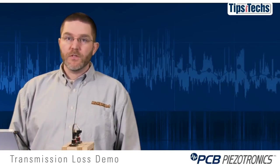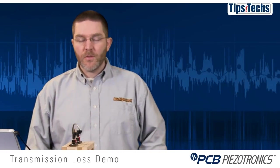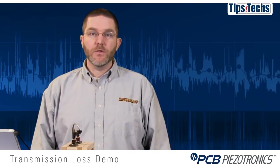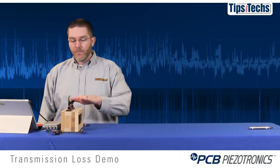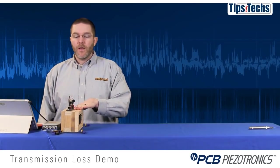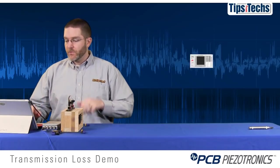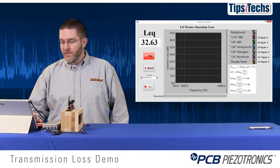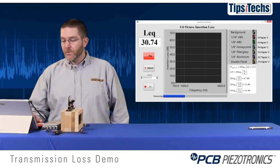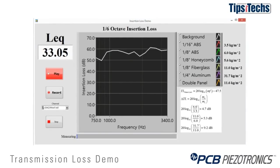The first thing we're going to do is determine the maximum insertion loss we can measure in this room. We'll do that by playing a sound through the speaker, then measuring the background noise in the room and subtracting the two levels. The program has automatically subtracted those and plotted them on the screen. You can see the maximum insertion loss we can measure in this room is about 60 decibels across the frequency range shown in the demo.